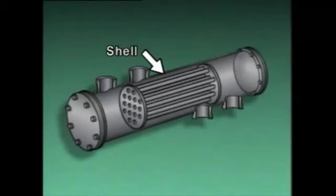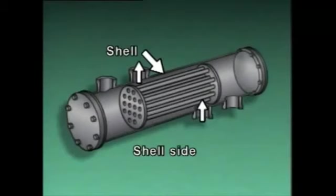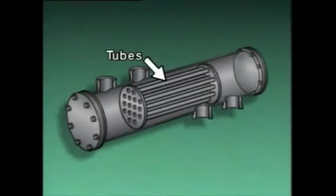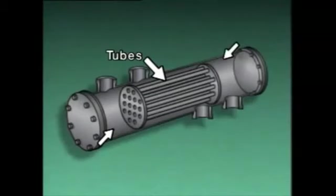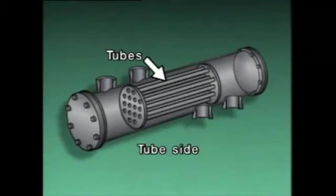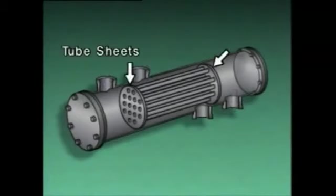The area inside the shell and outside the tubes is commonly called the shell side of the heat exchanger. The shell also has an inlet and an outlet. The tubes are used to create a separate flow path through the shell. Each end of the tubes opens into a head. One head directs flow into the tubes, while the other head directs flow out of the tubes. The area inside the tubes and heads is called the tube side of the heat exchanger. The heads also contain a tube side inlet and outlet. The ends of the tubes are supported by the tube sheets, which also isolate the heads from the shell side of the heat exchanger.